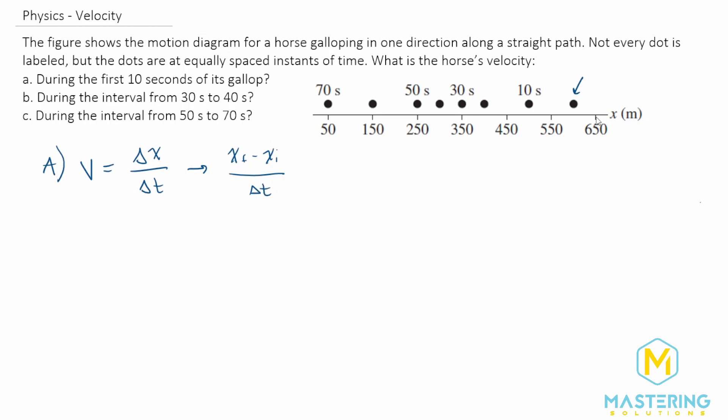Now in this first section, we know that it's 10 seconds. Delta t is 10 seconds. The x initial is starting at 600 meters, and then the horse is ending up at in between 450 and 550, so 500 meters.